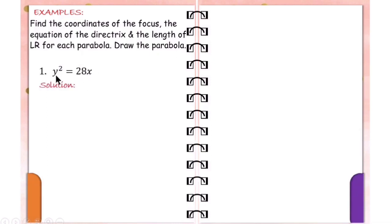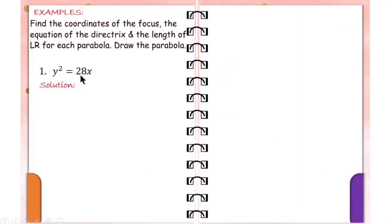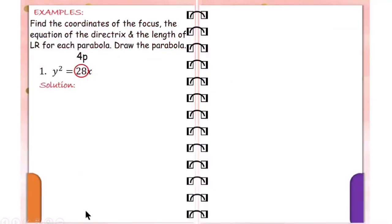Since it is quadratic in y, the parabola opens either to the right or left. It is of the form y squared equals 4px. Since 28 is positive, which is also the value of 4p, we can say that this is a parabola opening to the right.